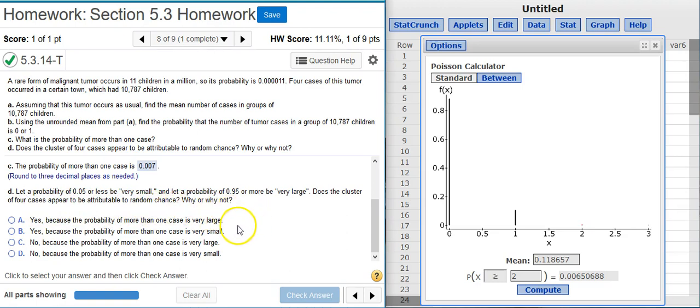Well, we can see that the four cases out of the 10,787—the probability of that happening is going to be a lot less than seven-tenths of one percent, which is the probability for more than one case. And it says here anything five percent or less is considered very small, so the probability that we're getting these four cases is going to be very, very small.